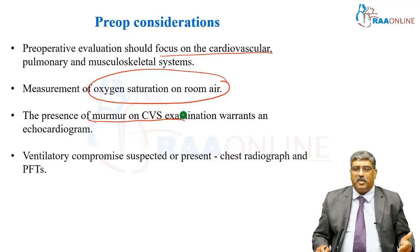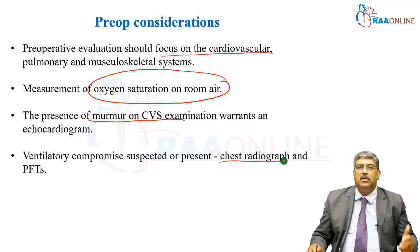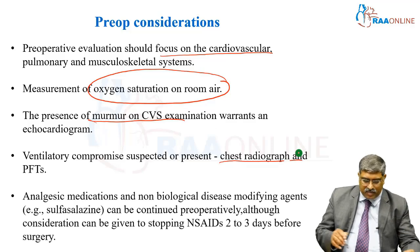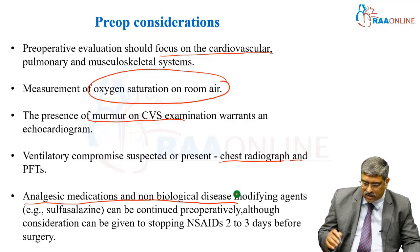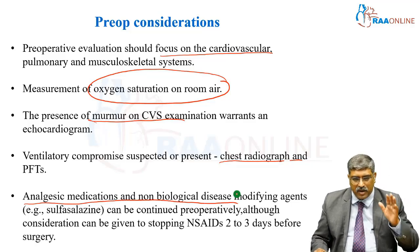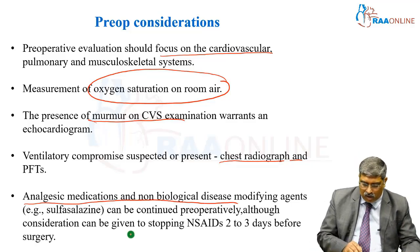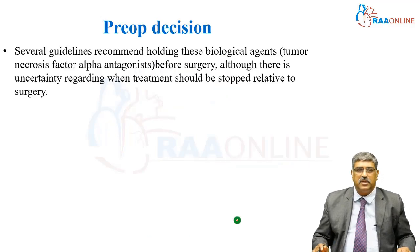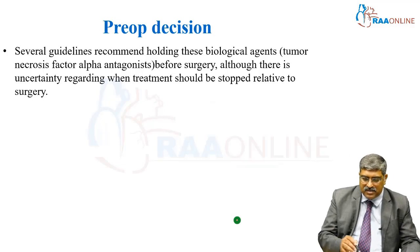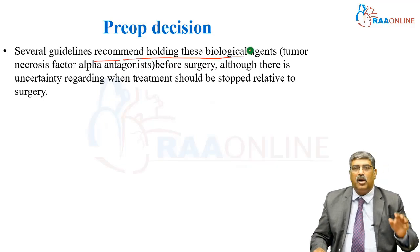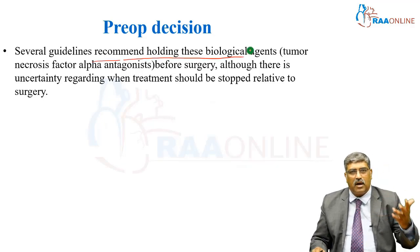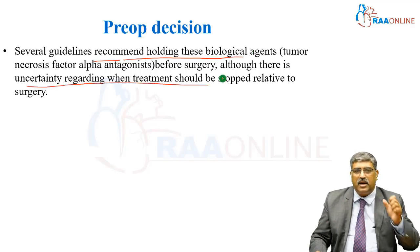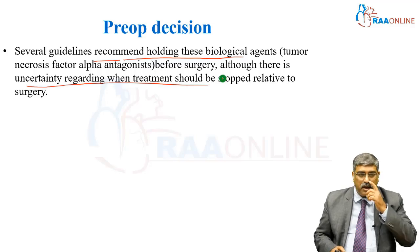In the ventilatory compromised patient, you have to do a chest radiograph as well as pulmonary function tests. Analgesic medication and non-biological disease-modifying agents can be continued preoperatively, although NSAIDs can be stopped two to three days before surgery. Several guidelines recommend holding the biological agent — tumor necrosis factor alpha antagonist — before surgery, although there is uncertainty regarding when treatment should be stopped relative to surgery.